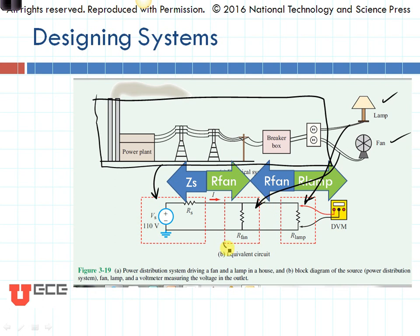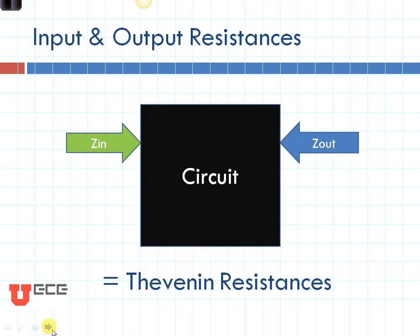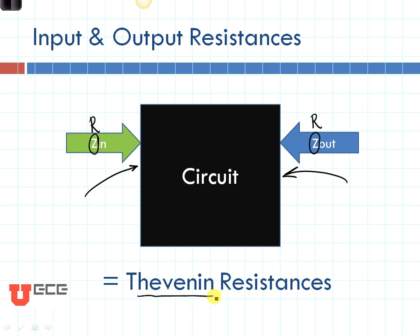In order to design individual blocks like this independently, there's a very important concept. That concept is input and output resistances. Let's suppose that we have a circuit — any circuit — that's this black box. If we look in, that's going to give us the input resistance. And if we look into the output side, that's going to give us the output resistance. A lot of times in the book and elsewhere, you will see Z — that is impedance as opposed to resistance. It's the complex resistance, so just consider that to be the same as resistance for this case. If we are looking in to either side, that's the same thing as using the Thevenin resistances, and you calculate it in the same way.